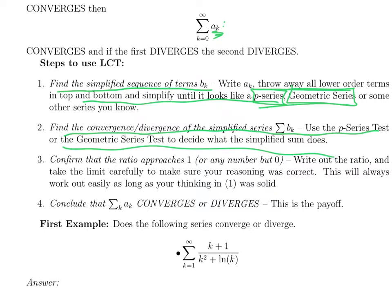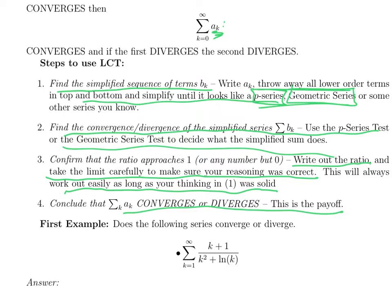The third step is a kind of 'eat your vegetables' step. You have to check that this really works. To check you've picked a good b_k satisfying the assumptions of the theorem, you write out a_k over b_k and take the limit as k goes to infinity. This will look scary, but not be that bad. If you did a good job, the limit will be 1, and then whatever your simplified series does, that's what your original series does.